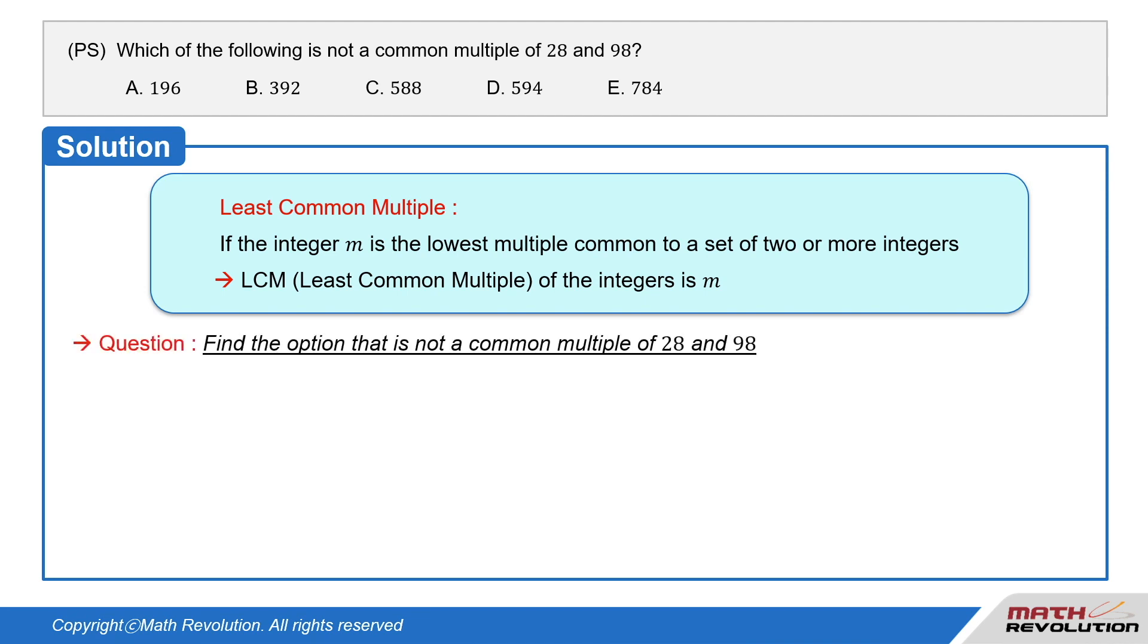We are required to find the option that is not a common multiple of 28 and 98. The multiples of 28 are 28, 56, 84, 112, 140, 168, 196, and so on.